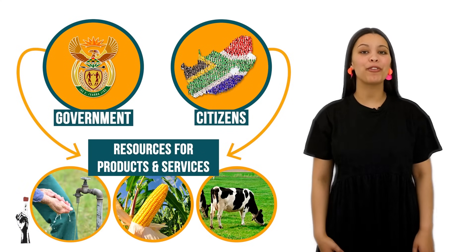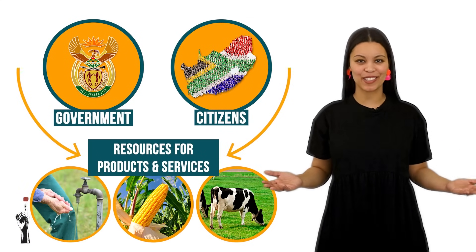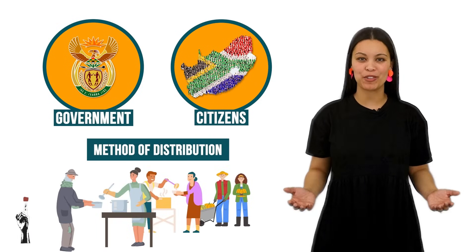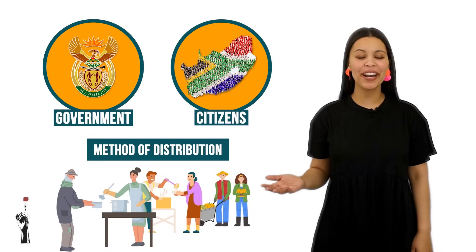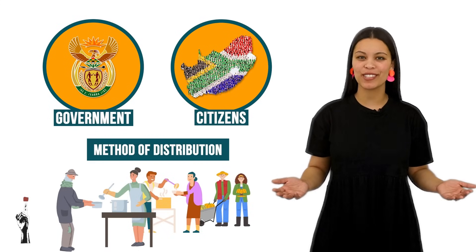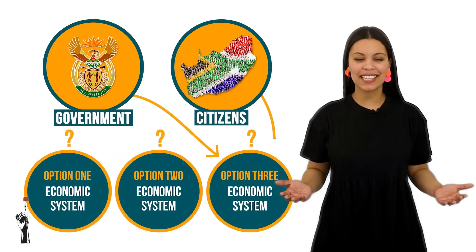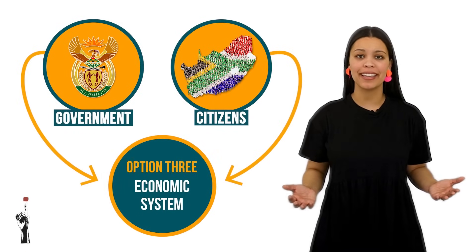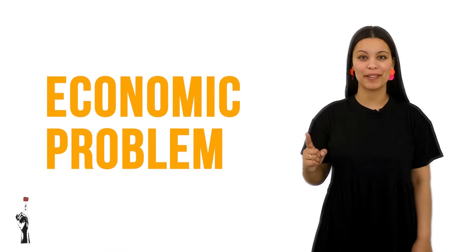This means that the government or citizens decide which resources to use for the production and consumption of products and services. They also determine the method of distribution so that all citizens can receive the products and services produced effectively. Ideally we would like the government and citizens to determine the economic system, but that is not always the case because of the economic problem.